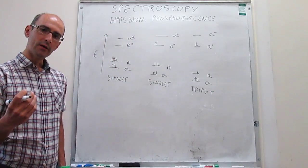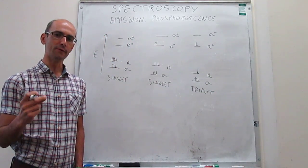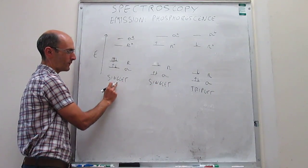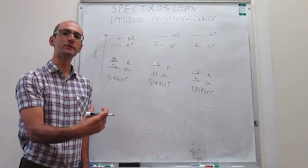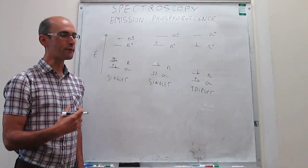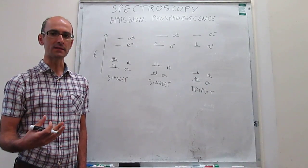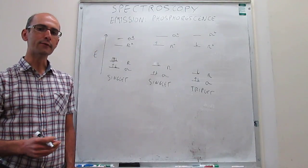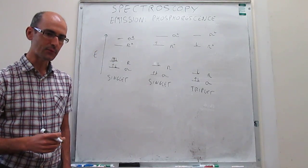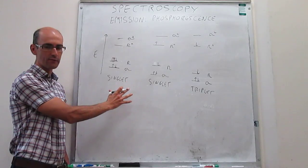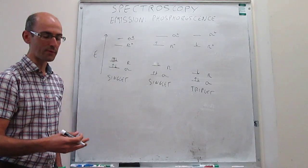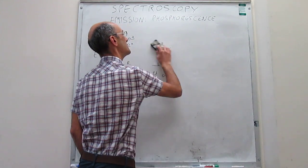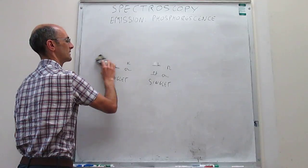When doing absorption, the spin selection rule forces us to go from the singlet ground state to the singlet excited state. Going directly to the triplet excited state through absorption of a photon is forbidden by the spin selection rule. But under some circumstances, you can actually reach the triplet state from the singlet excited state, and that is something necessary for phosphorescence. Now that we understand what singlet and triplet states are, we can draw a set of energy states that are singlet and triplet.